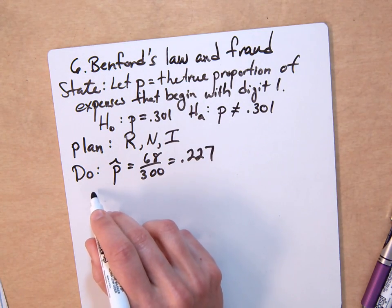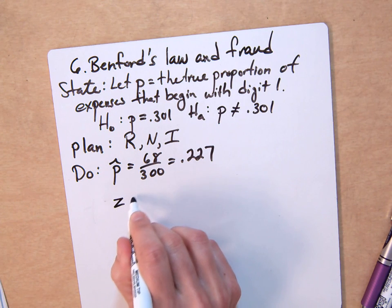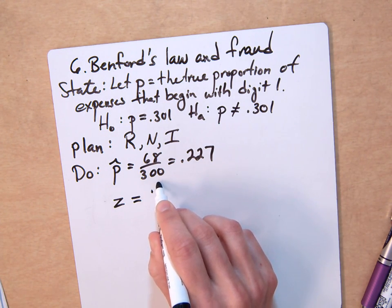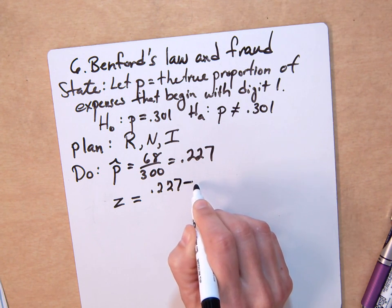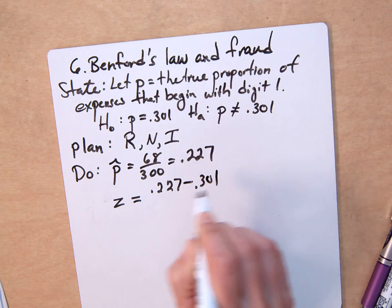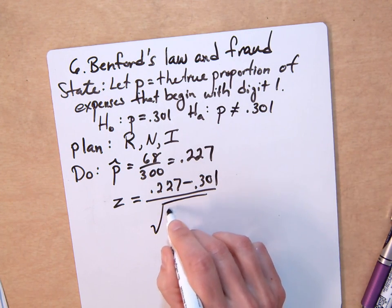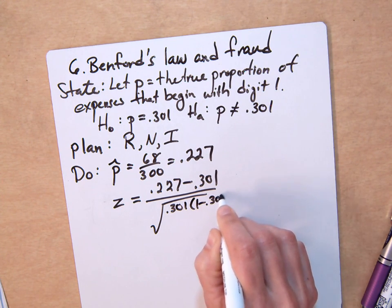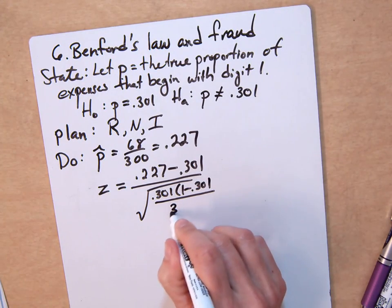The test statistic Z—and the formula for this is in your formula card—is 0.227 minus 0.301 over the sample standard deviation...